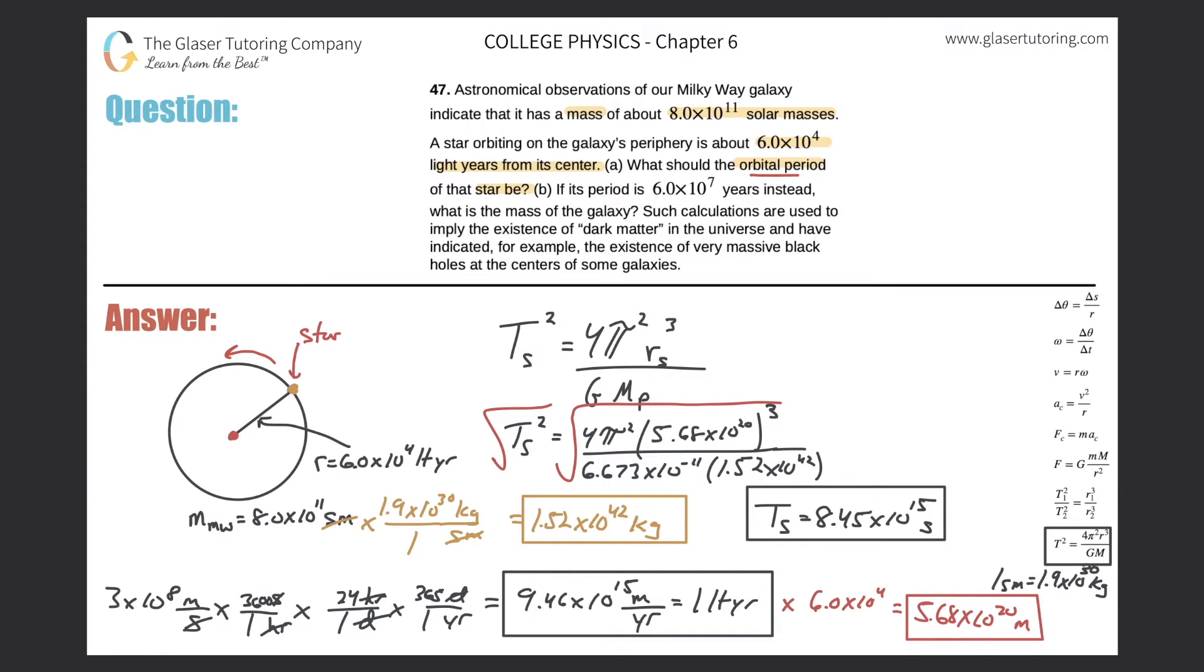Let's take a look at letter B. It says if its period is 6 times 10 to the 7 years instead, so I guess we're going to have to do the conversion, what is the mass of the galaxy? Basically what we're doing is we're working backwards. Now they're giving me the orbital period and they're asking me what's the mass of the Milky Way, which is the mass of the parent system. So we're going to have to convert this into seconds. I have to convert that into seconds.